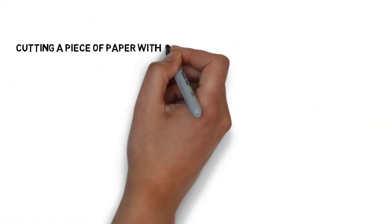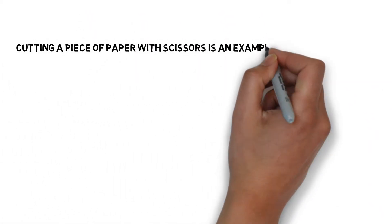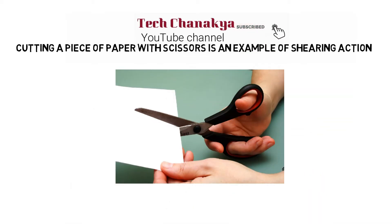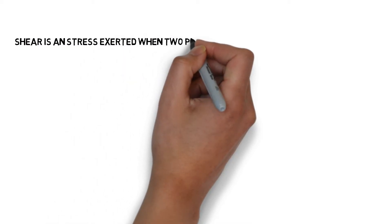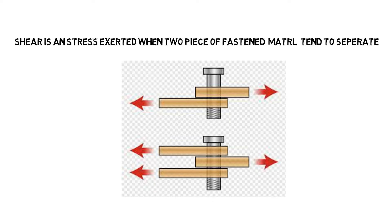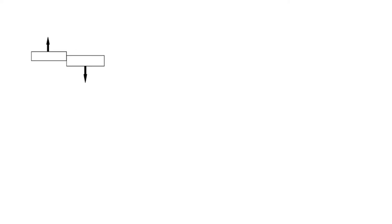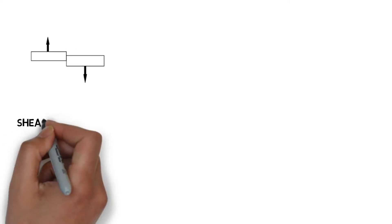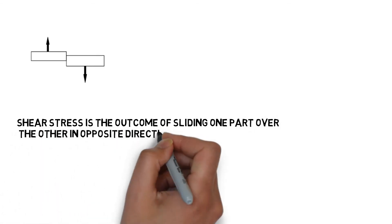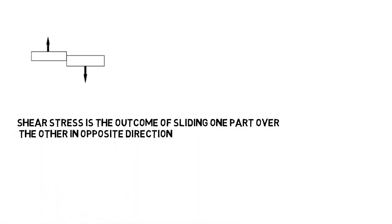Shear — cutting a piece of paper with scissors is an example of shearing action. Shear is a stress exerted when two pieces of fastened material tend to separate. Shear stress is the outcome of sliding one part over the other in opposite directions.